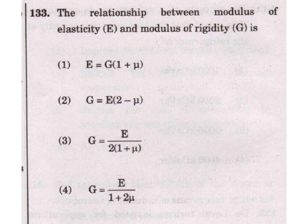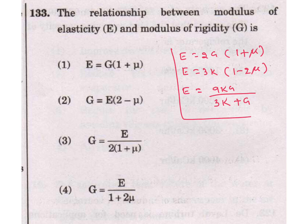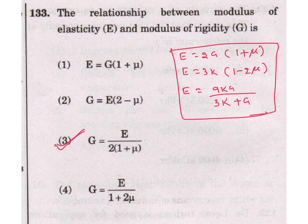The relationship between modulus of elasticity E and modulus of rigidity G: E = 2G(1 + μ), where μ is Poisson's ratio. Also, E = 3K(1 − 2μ), and E = 9KG / (3K + G). All three relations are important. From these, G = E / [2(1 + μ)]. Option 3 is the answer.